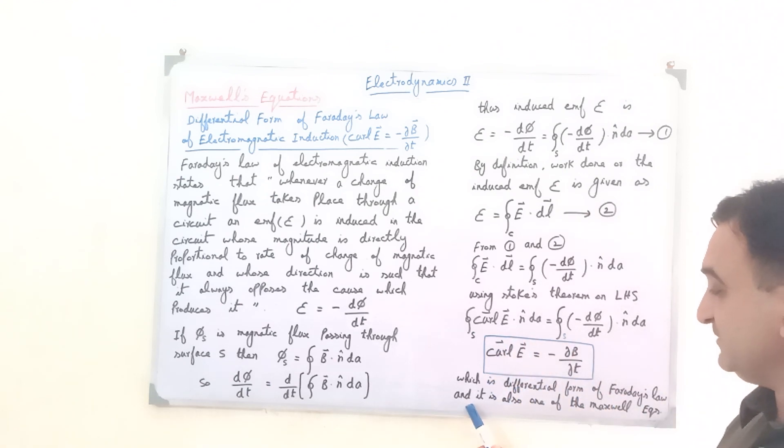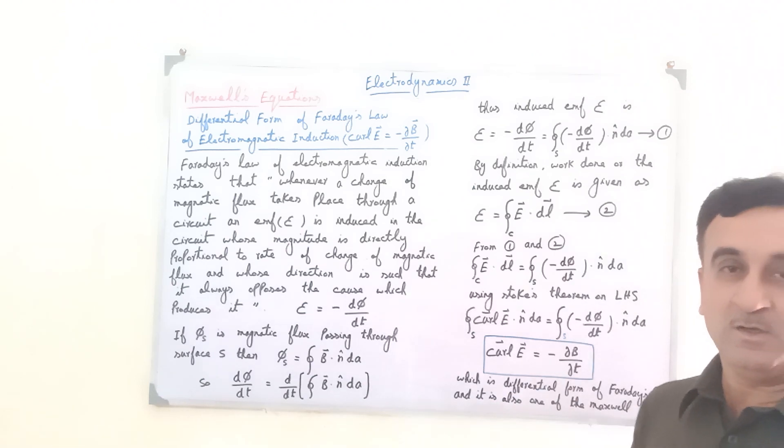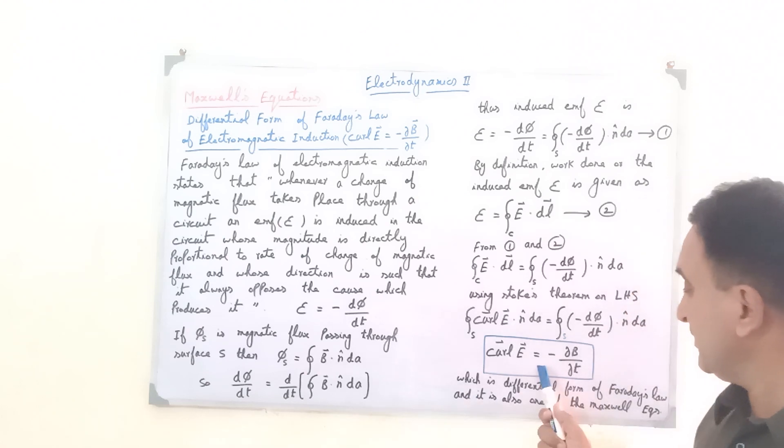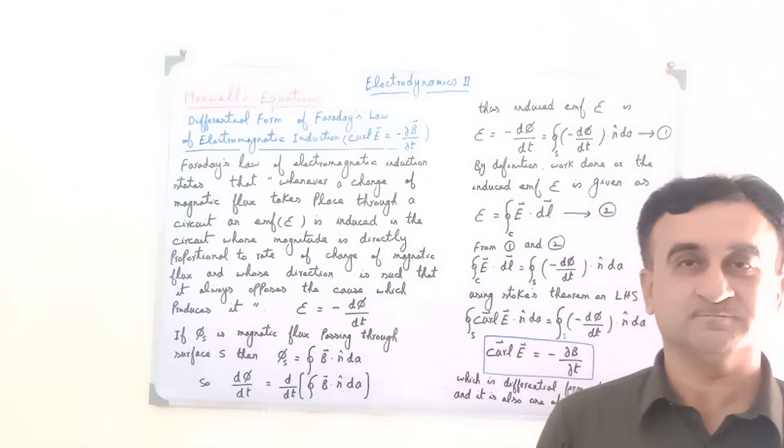And it is also one of the Maxwell equations. Curl E is equal to minus partial B by partial t. This is the Maxwell equation.